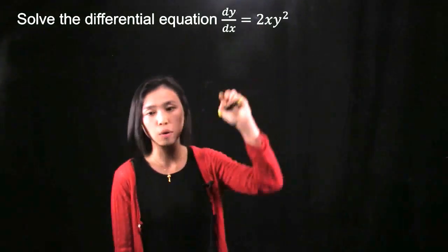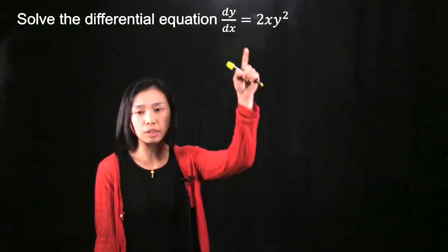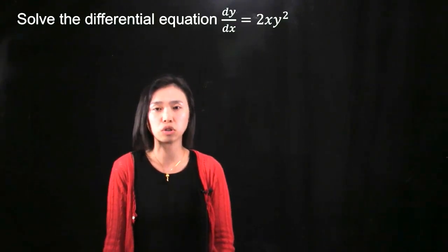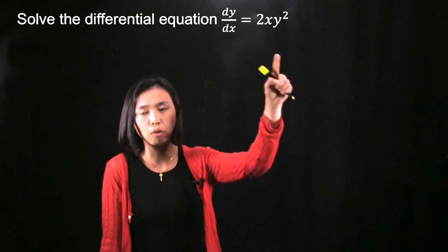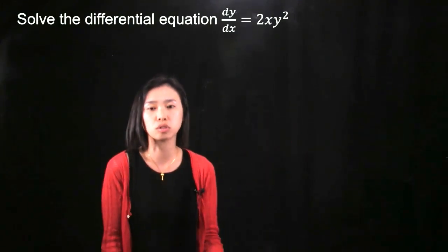We want to solve this differential equation dy/dx is equal to 2xy squared. We notice that this differential equation is actually separable. Separable differential equation means that you can separate the variables x and y on the two sides of the equation.